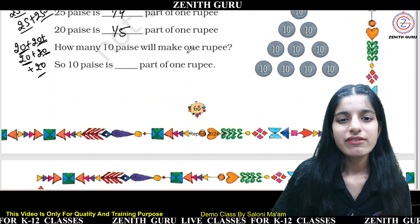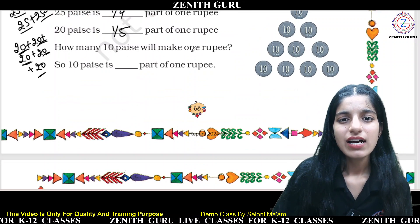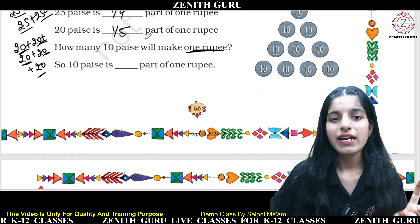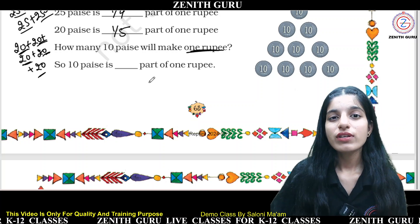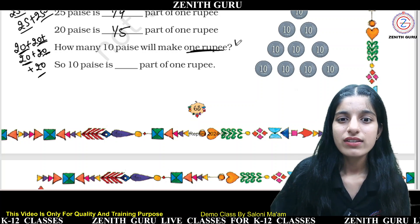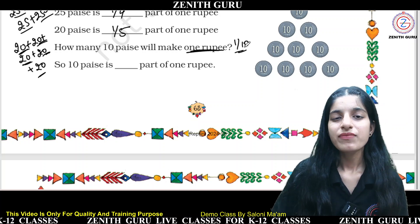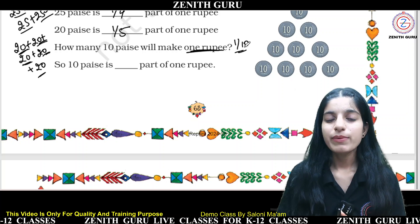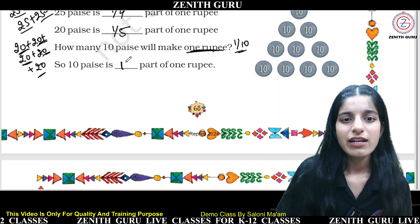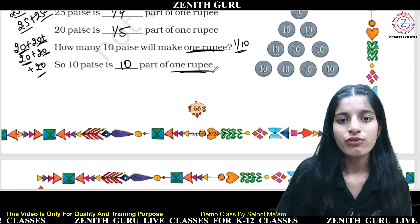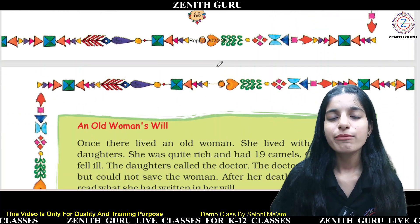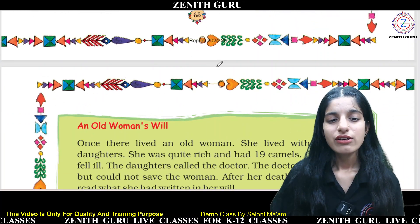How many 10 paise will make 1 Rupee? If you use 10 paise 10 times, you get 1 Rupee. So 10 paise is the 1/10th part of 1 Rupee, which means 1 Rupee can be written as 10 parts of 10 paise each.